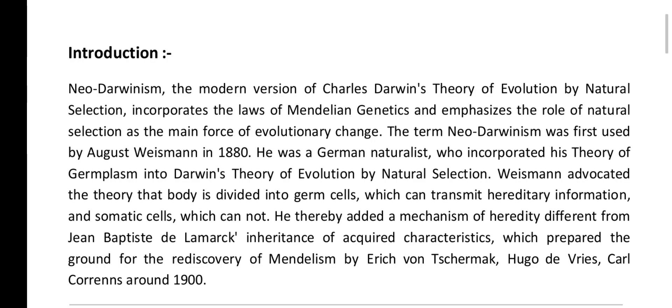Weismann advocated the theory that the body is divided into germ cells, which can transmit hereditary information, and somatic cells, which cannot. He thereby added a mechanism of heredity different from Lamarck's inheritance of acquired characteristics, which prepared the ground for the rediscovery of Mendelian genetics by De Vries, Hugo, and Correns around 1900.